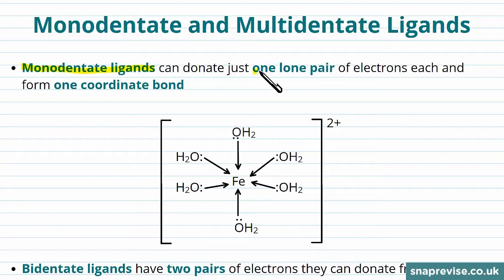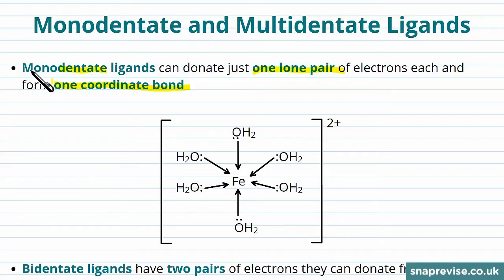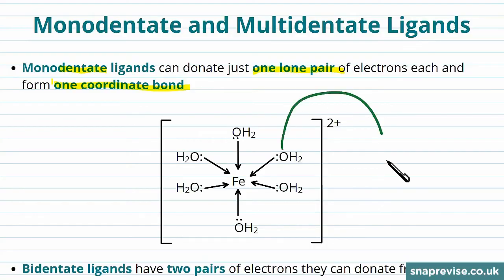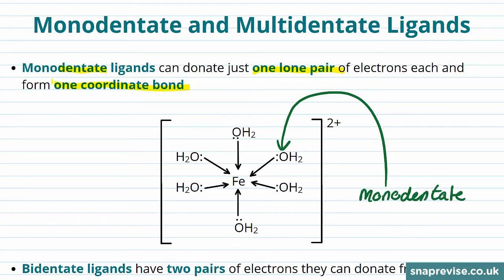We can divide ligands into different categories. Monodentate ligands can donate just one lone pair of electrons and form one coordinate bond. The 'dentate' part comes from the Latin for tooth or to bite, and 'mono' means one — so monodentate originally meant one bite, showing that they only attach in one place. H2O is a good example of a monodentate ligand; the oxygen only donates one lone pair per molecule of water that bonds.